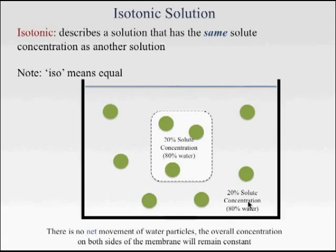Since the solution surrounding the cell is isotonic, there's no net movement of water particles. The overall concentration on both sides of the membrane will remain constant. Therefore water can move into the cell and out of the cell, but there's no net change.